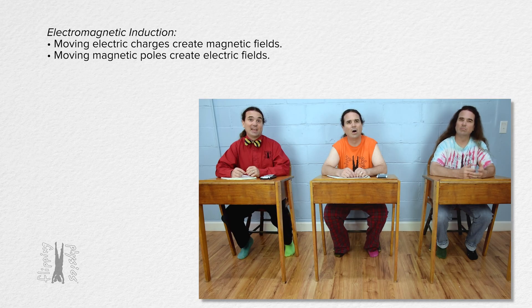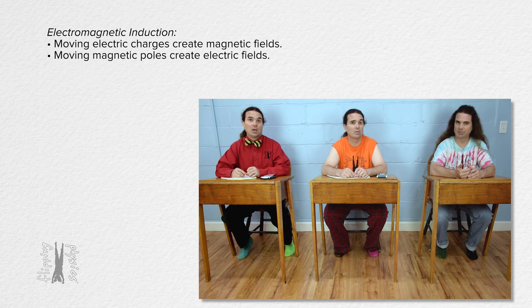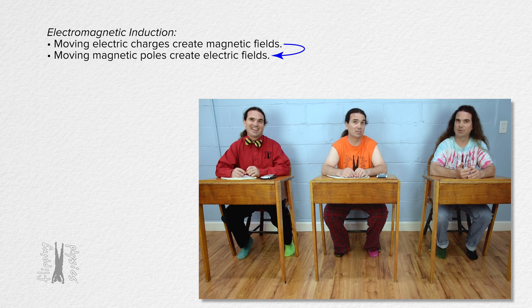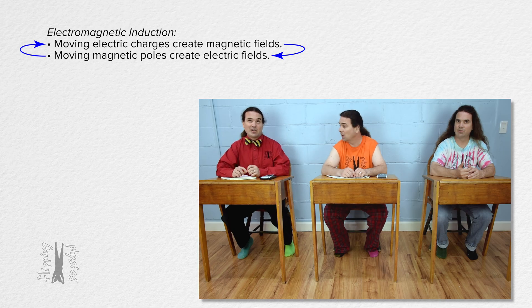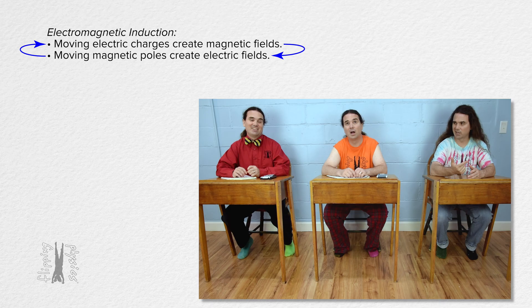Wait, so moving electric charges create magnetic fields which cause magnetic forces on magnetic poles, which can move magnetic poles. And moving magnetic poles create electric fields which cause electric forces on electric charges, which can move electric charges. And moving electric charges create magnetic fields, which is what I just said.